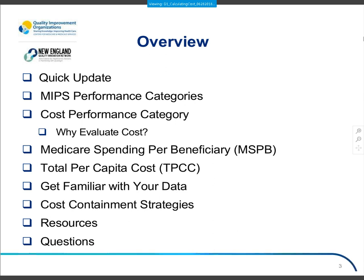Quick overview of today's presentation: I have a brief update on NIPPS participation and APM participation in the Quality Payment Program for 2018. Then I'll briefly talk about the NIPPS performance categories, and then we'll dive into the Cost Performance Category in particular. We'll discuss why we need to evaluate costs, dig into the two measures — MSPB and TPCC — look at the QRUR report, discuss cost containment strategies, and then take questions.